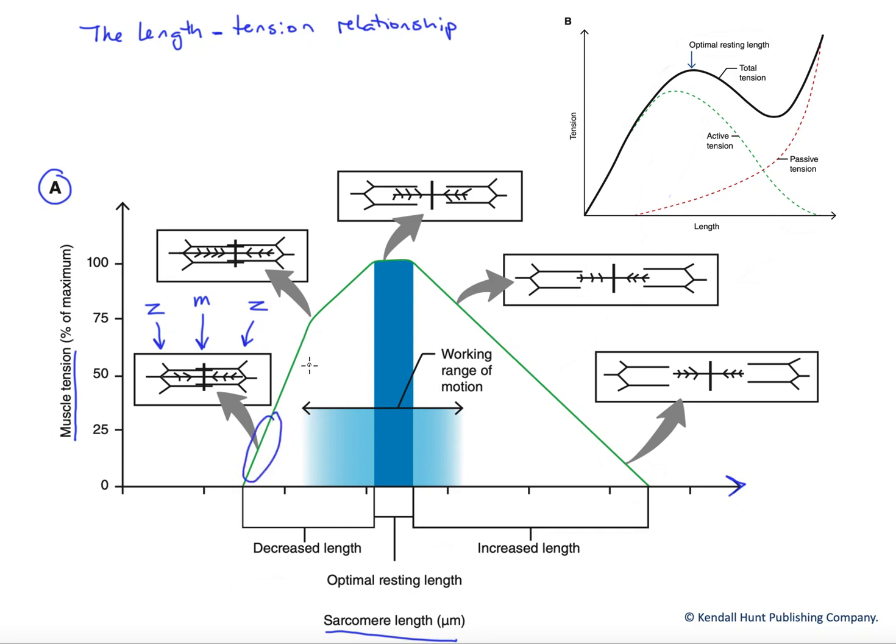Now as we stretch a muscle passively and then stimulate it, we pull those thick filaments out from in between the thin filaments a little bit, and we get more optimal overlap.